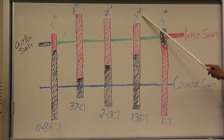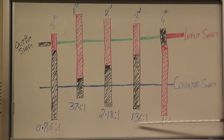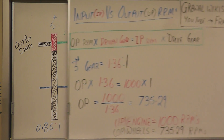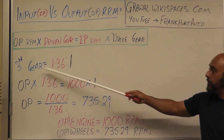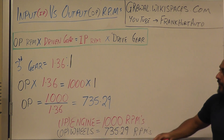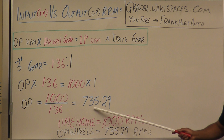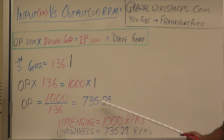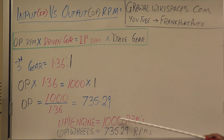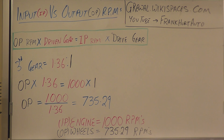For third gear, the driven gear over drive gear gives us 1.3621. Plugging that into the formula and solving gives us 735.29. In perspective: if the engine is running at 1,000 RPMs, the wheels are running at approximately 735 RPMs.